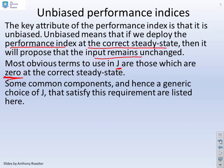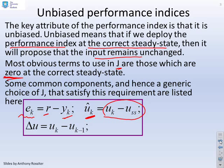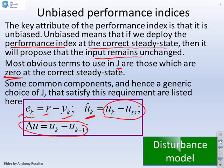The most obvious terms to use in the performance index J are those which are zero at the correct steady state. Common components include the error as the distance between the target and the output, which is zero if the output reaches the target; deviation variables U, which is the distance of the input from the expected steady state; or rates in U, the difference between U_K and the previous U, which will be zero at the correct steady state.